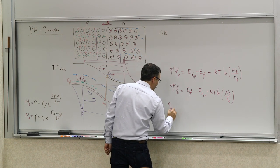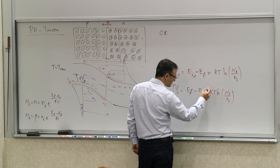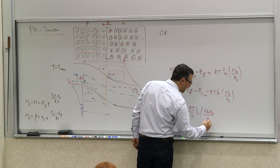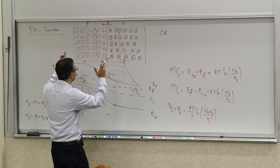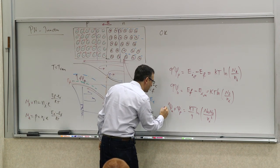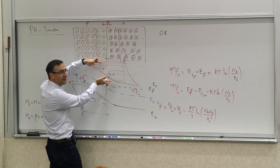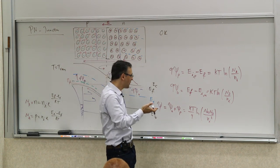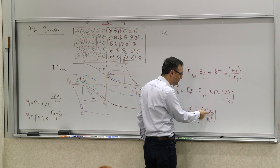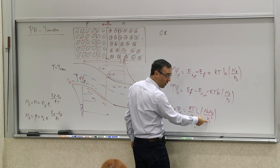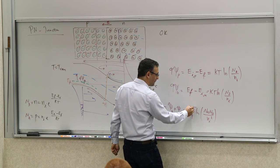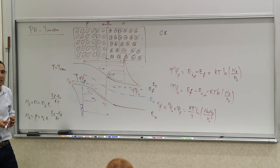Therefore, psi_n plus psi_p equals kT/q · ln(NA·ND / Ni²). This is in volts — the voltage across the junction, the sum of the two built-in potentials. This is the built-in potential — the height of the barrier that gets built naturally from the random thermal movement. These are known quantities: you've designed it to have a certain doping level NA and ND, and Ni for silicon is 1.45×10^10 per cubic centimeter. So you can calculate the height of this built-in potential.